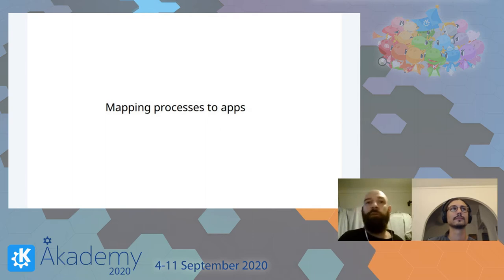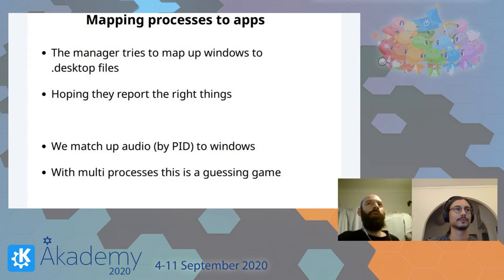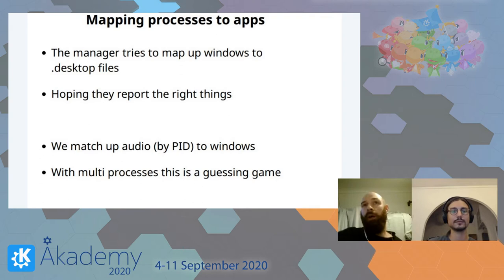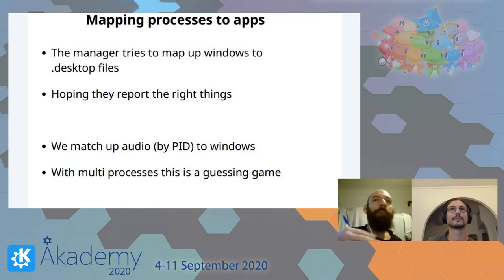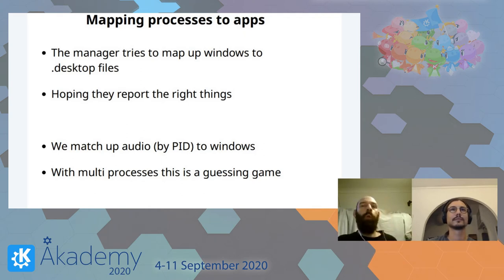Another problem: one of Plasma's jobs is to map everything happening on your system together. You open something from your start menu — we have a desktop file with an icon and a name — and then a window appears and tells us what name it thinks it is, and we hope they resemble each other enough to match. Very often applications just write garbage in their window properties. We're full of hacks and heuristics to guess. Also, because everything's multi-process, the audio icon in your task manager isn't in the same process as the Firefox window — we have to grab two bits of information, guess, and smash them together. We're not always right.